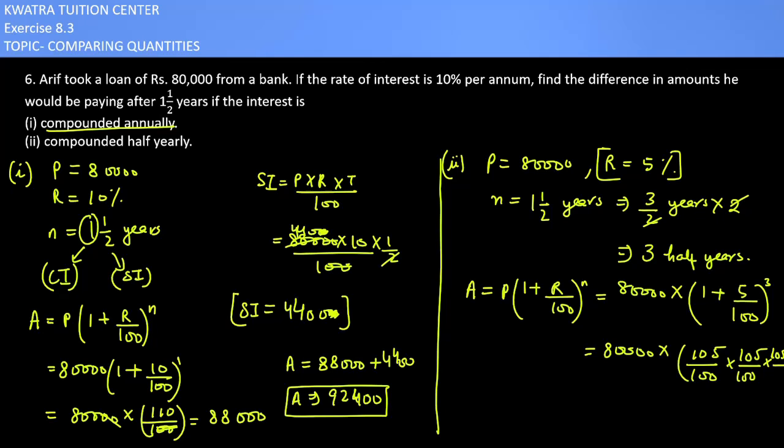Cancel two zeros with zeros, you are left with 100 in denominator. So you have 8 into 105, 105, 105 divided by 100. The value you are getting is 92,610.